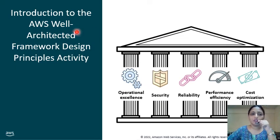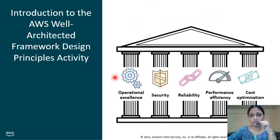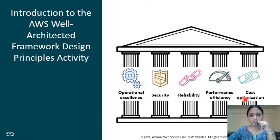Here we have the introduction to the AWS Architecture Framework design principles. We design the AWS Well-Architected Framework consisting of all six pillars: Operational Excellence, Security, Reliability, Performance Efficiency, and Cost Optimization.